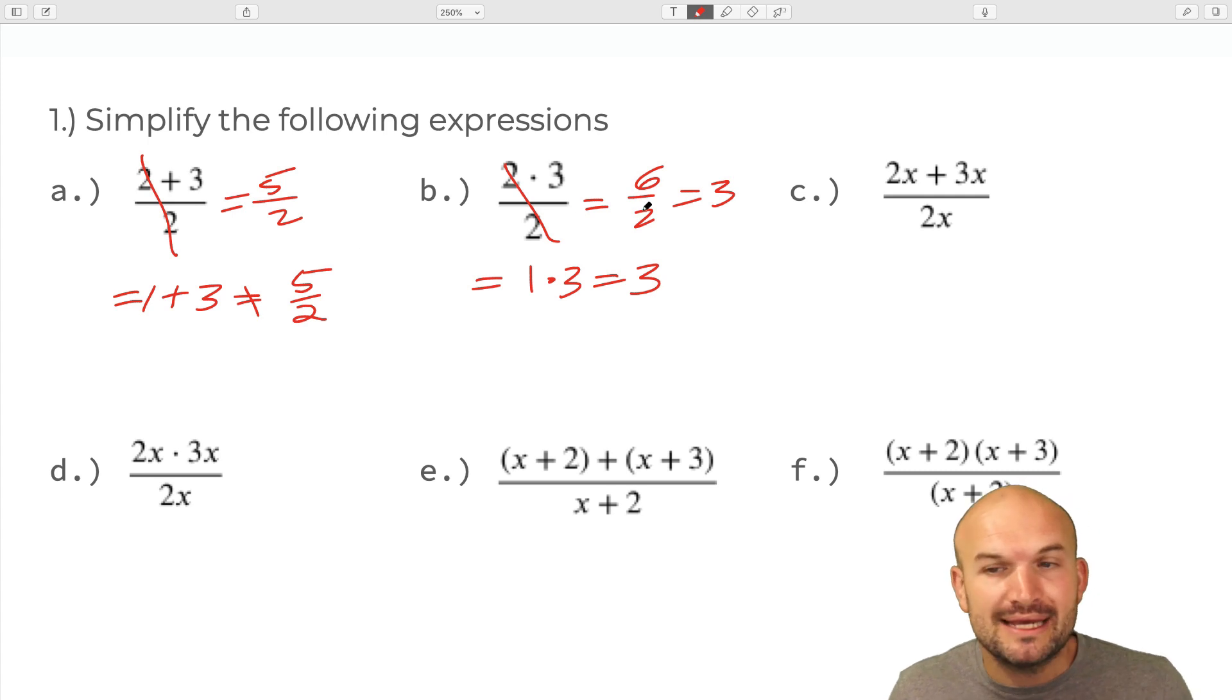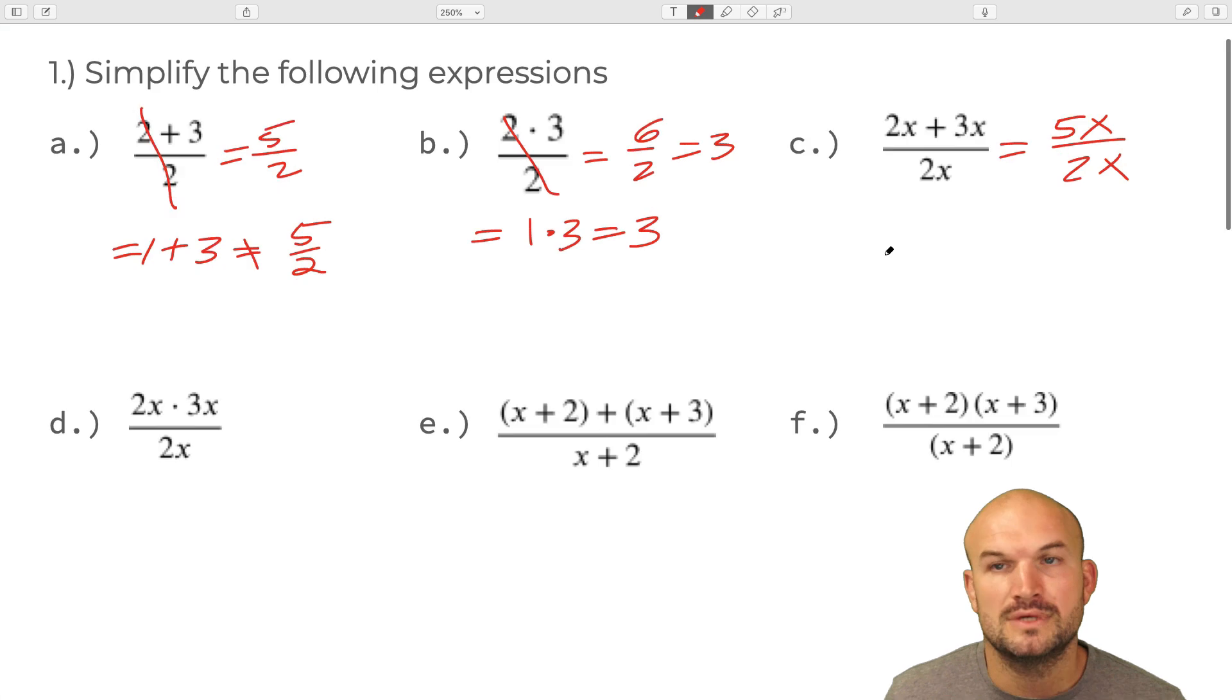Now, to make things a little bit more complicated, all we're going to do is add some x's. But again, we recognize here they're separated by addition. So therefore, I need to add them. I cannot divide out the two x's. So another way to look at this problem is to distribute this 2x to both of these terms. So we have to do this when the terms are separated by addition and subtraction. We do not have to do this when terms are separated by multiplication and division.